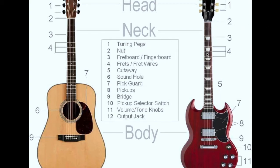The electric guitar has a cutaway — in acoustic guitars we don't always have a cutaway, but in electric guitars you can see a cutaway just to accommodate reaching towards the higher frets. There are also many acoustic guitars which have cutaways, usually for people who want to play solos at the upper end of the guitar.